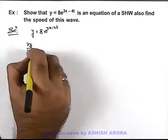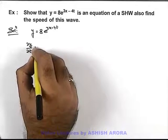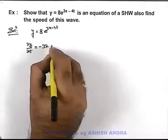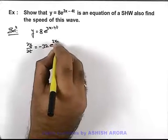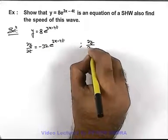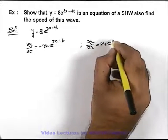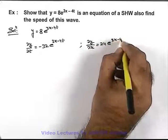We can find ∂y/∂t, which is the particle motion speed, which can be given as -32e^(3x-4t). Similarly, we can find the slope of the displacement curve, ∂y/∂x, which is given as 24e^(3x-4t).